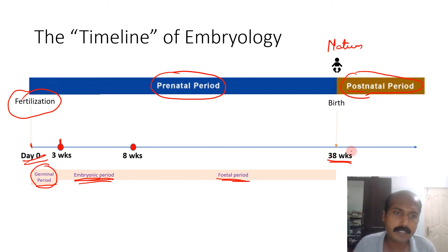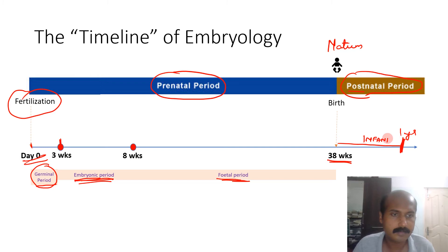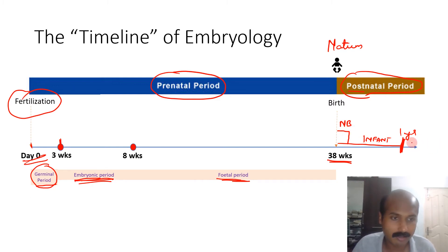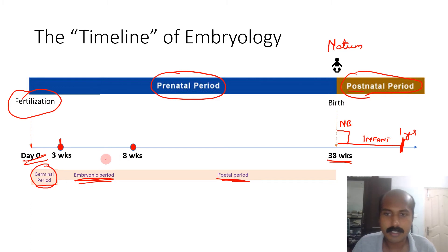After birth, up to one year, the child is called an infant. The first 28 days are called the newborn or neonate. From one to three years the child is called a toddler, then a younger child, an older child, teenagers, and adolescents. These are all standard terminologies important for studying embryology.